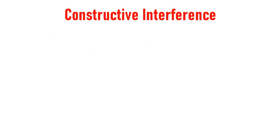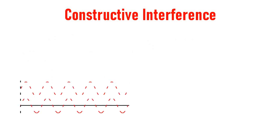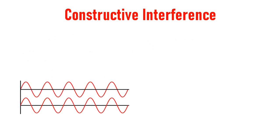Constructive interference. Consider two waves. These two waves have crest to crest correspondence and also trough to trough correspondence. That means both of these waves are in phase.